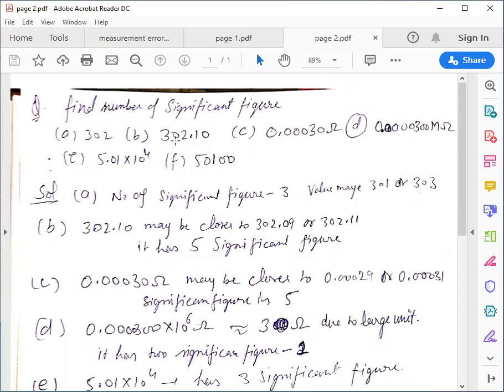There are some questions given to us in which we have to calculate significant figures. First, part A is 302, part B is 302.10,